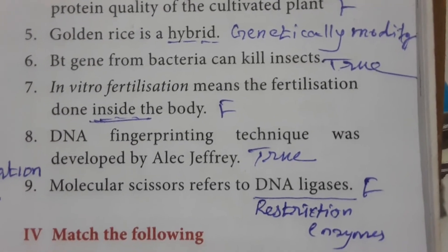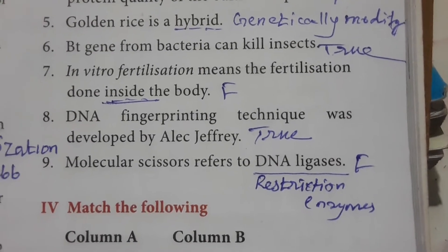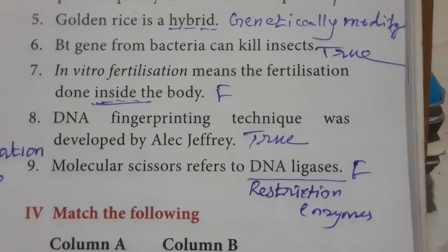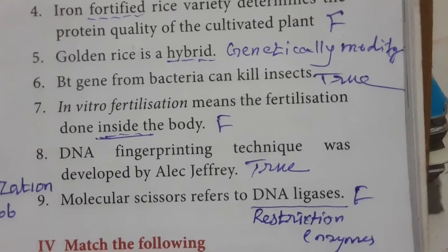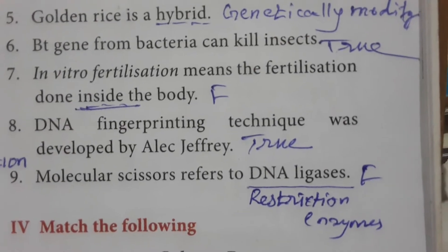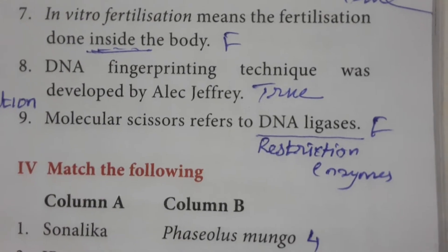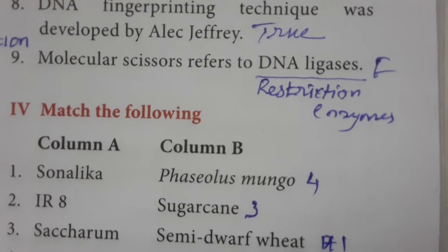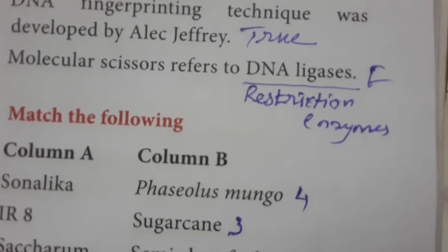Bt gene from bacteria can kill insects — true. In-vitro fertilization means fertilization is done inside the body — this is false, IVF means fertilization outside the body. DNA fingerprinting technique was developed by Alec Jeffrey — true. Molecular scissors refers to DNA ligases — false, molecular scissors refers to restriction enzymes.